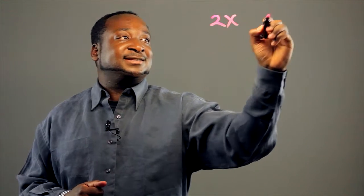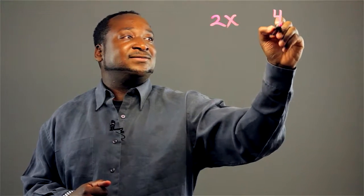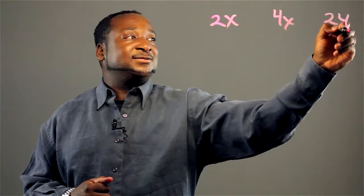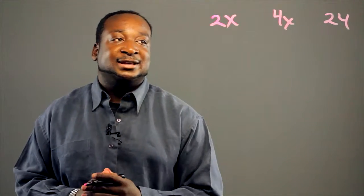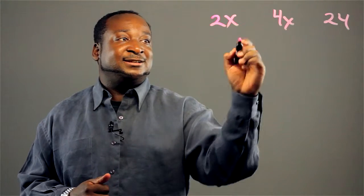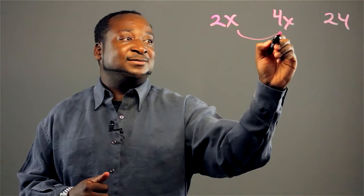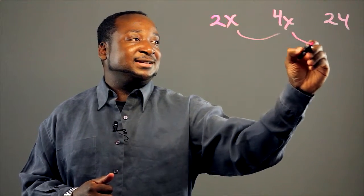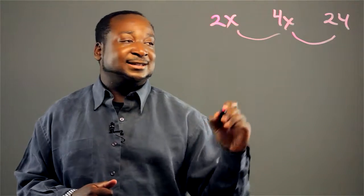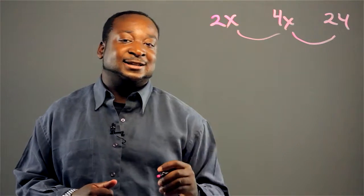Hi, my name is Stefan. Today I'm going to be speaking on how to find the x, or the unknown, in a geometric sequence. Let's say for example we have the sequence 2x, and 4x, and 24. We know that in a geometric sequence we're always multiplying by the same constant to get the next number.